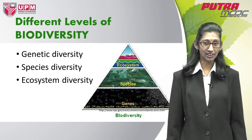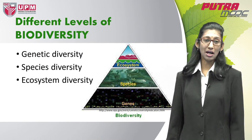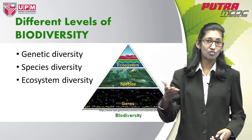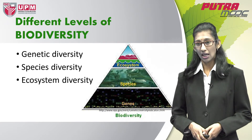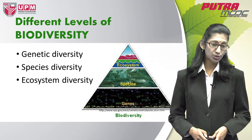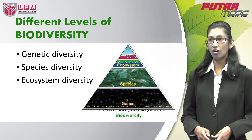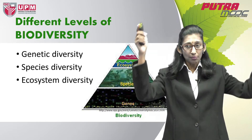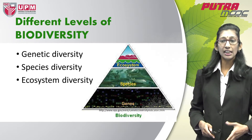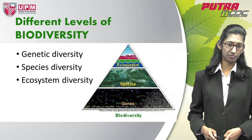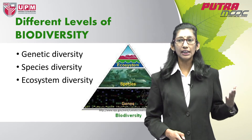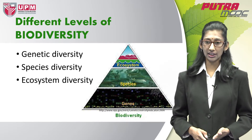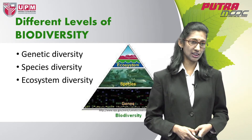Earlier on during our discussion, we spoke about biodiversity, referring to it as the degree of variation among living organisms. Now I would like to talk a bit more on the levels of biodiversity. Biodiversity is at the macroscopic level and can be divided into three different levels: ecosystem diversity, species diversity, and genetic diversity.